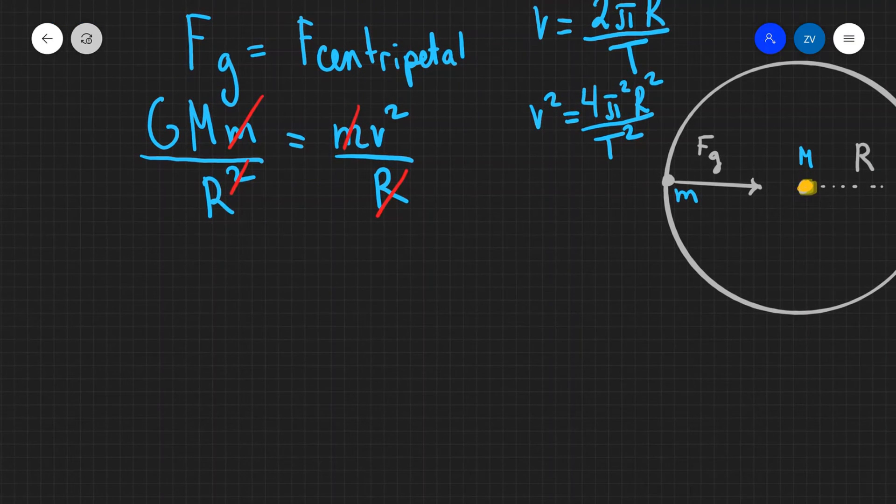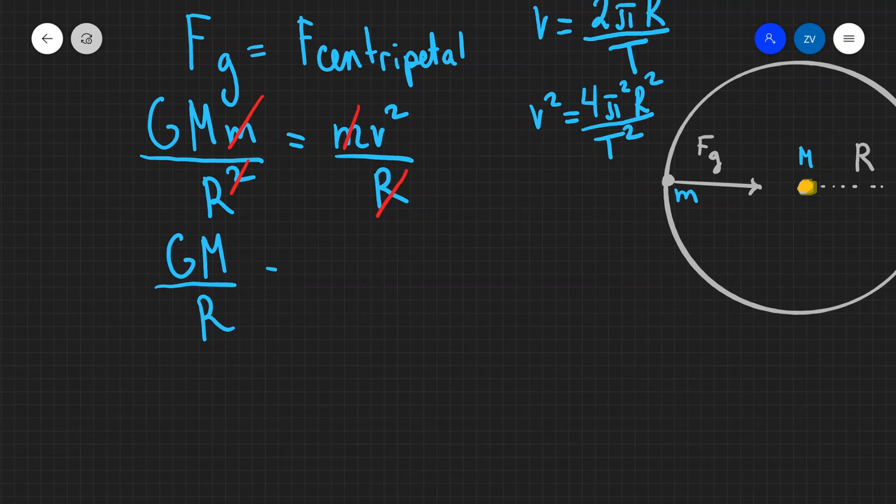Now let's rewrite the following equation with all the cancellations so it's nice and neat. And we get that GM divided by r is going to equal v squared. Now rather than v squared I'm going to put this expression in there like so.